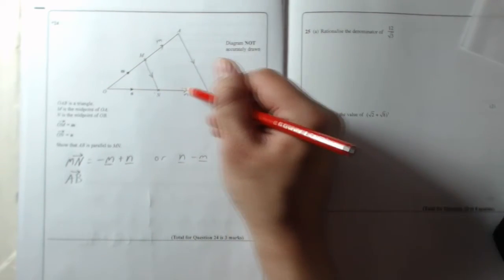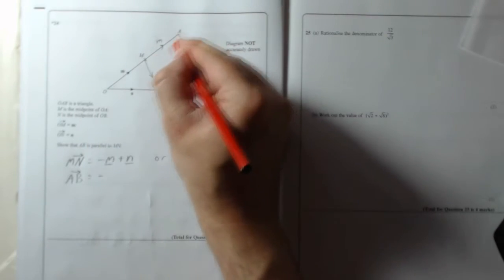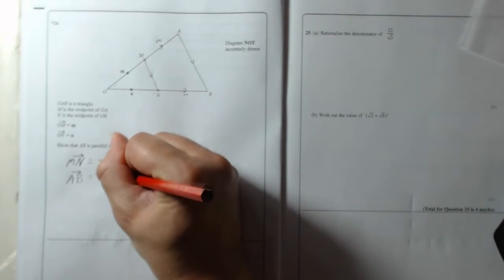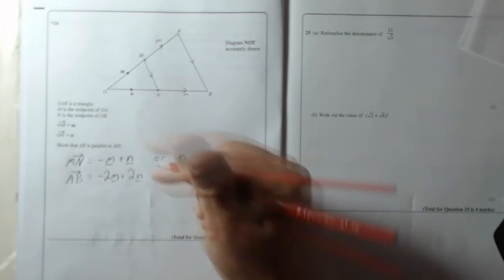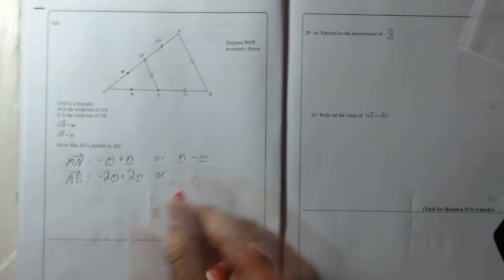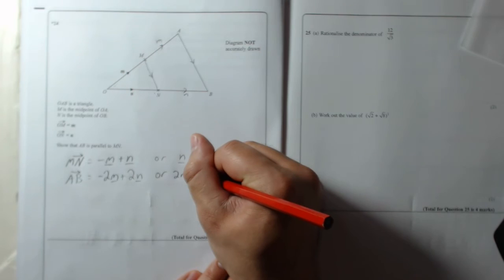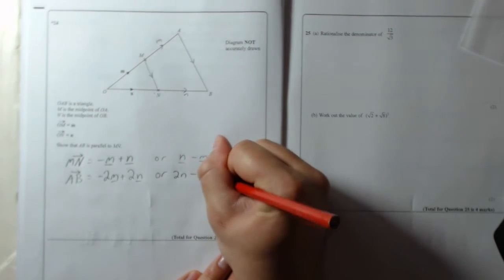Forwards down N forwards down N, so it is minus 2M plus 2N. So you can see that it is a multiple. The other way around, put the positive one first: 2N minus 2M.